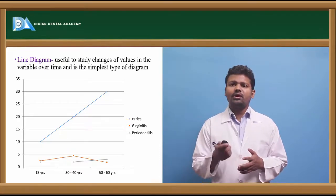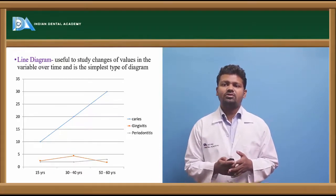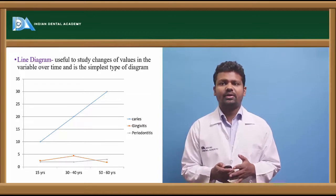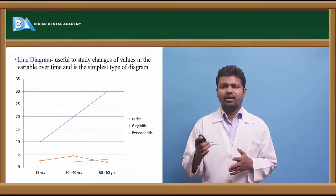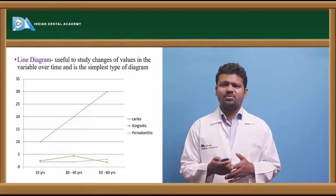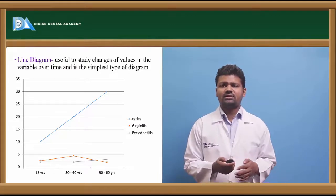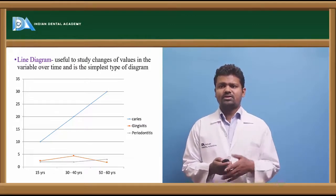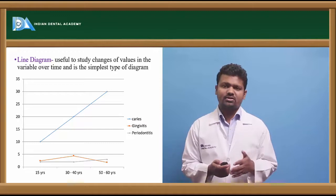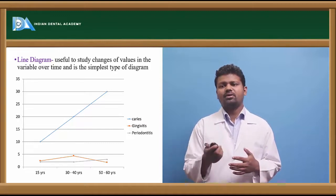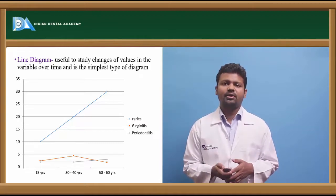The line diagram is useful to study changes in values over time. You can see caries prevalence increasing as the line goes upward, whereas gingivitis first went to higher prevalence, then considerably decreased.